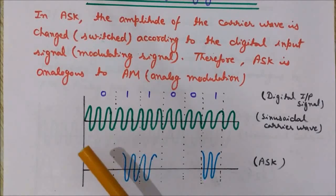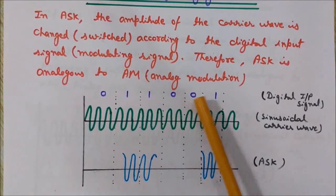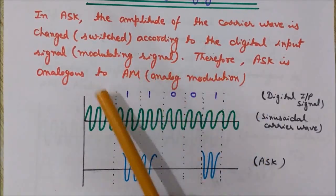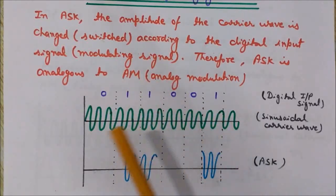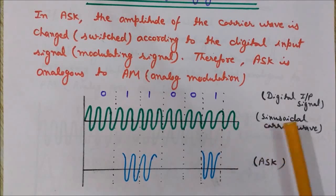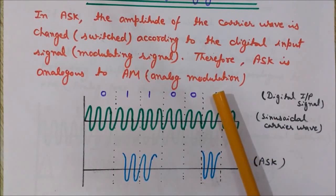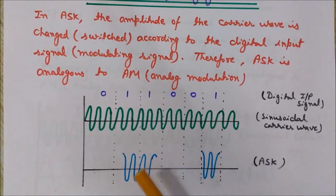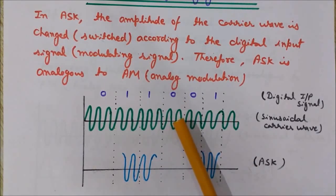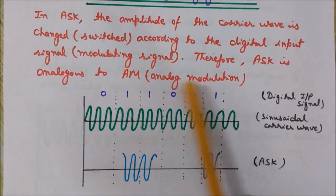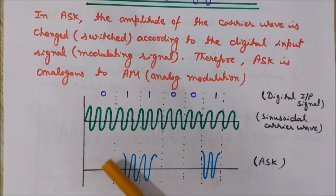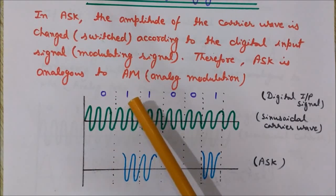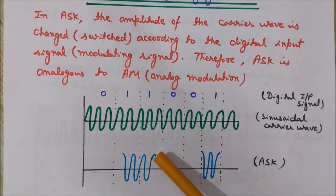Let's understand ASK with a simple example. The digital input signal is 0 1 1 0 0 0 1 — a binary digital sequence. The carrier wave is sinusoidal, that is analog in nature. We want to change the amplitude of this carrier wave according to this binary sequence. In amplitude shift keying, we do not transmit any signal when the input is 0, and when it is 1, the carrier wave is transmitted.